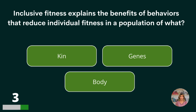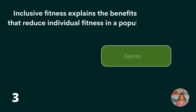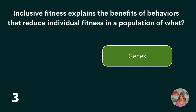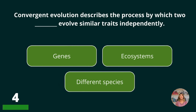Inclusive fitness explains the benefits of behavior that reduce individual fitness in a population of what? Kin, genes, or body? Genes.